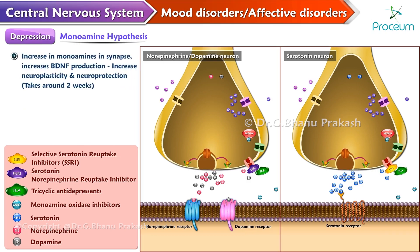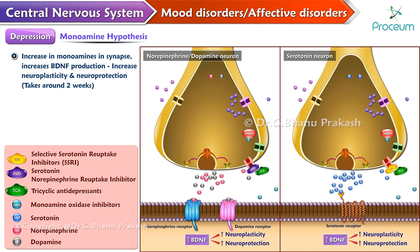An increase in monoamines in the synapse increases brain-derived neurotrophic factor production, and there is an increase in neuroplasticity and neuroprotection. This takes around two weeks, and hence a lag period in the antidepressant effect is usually seen.